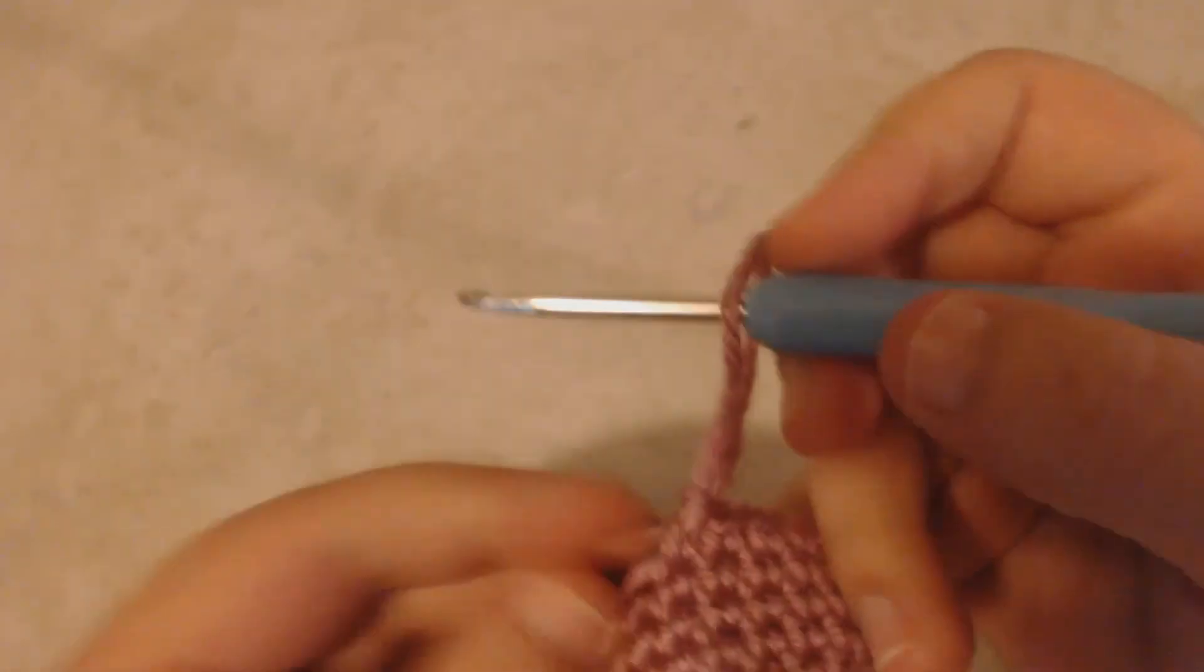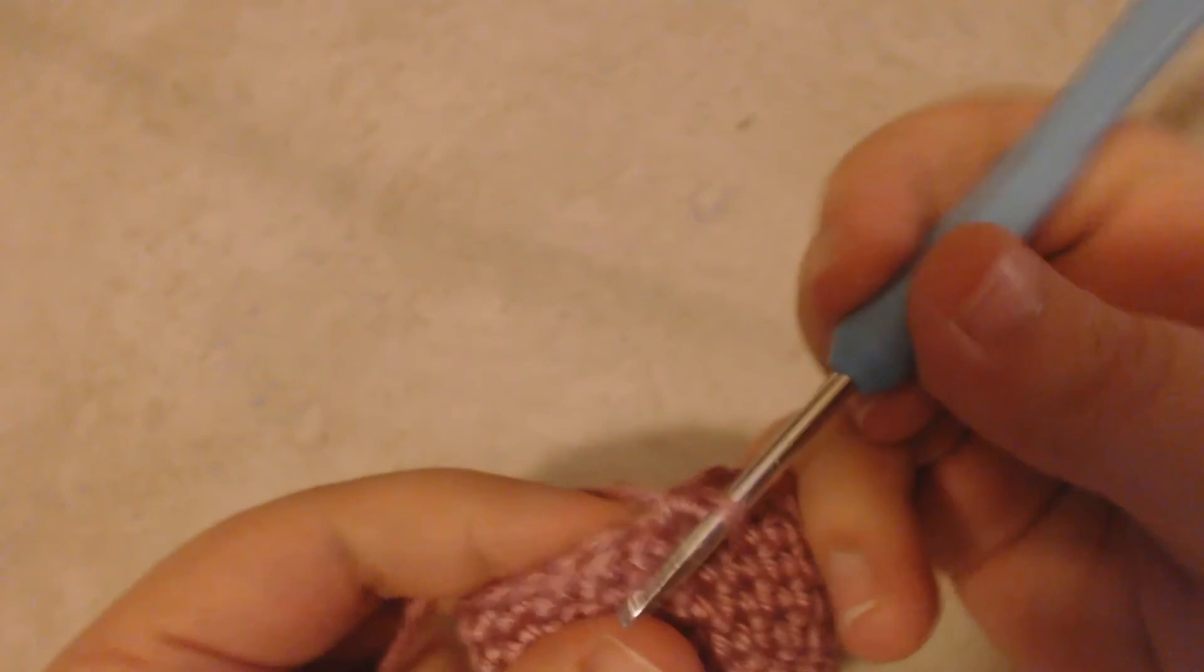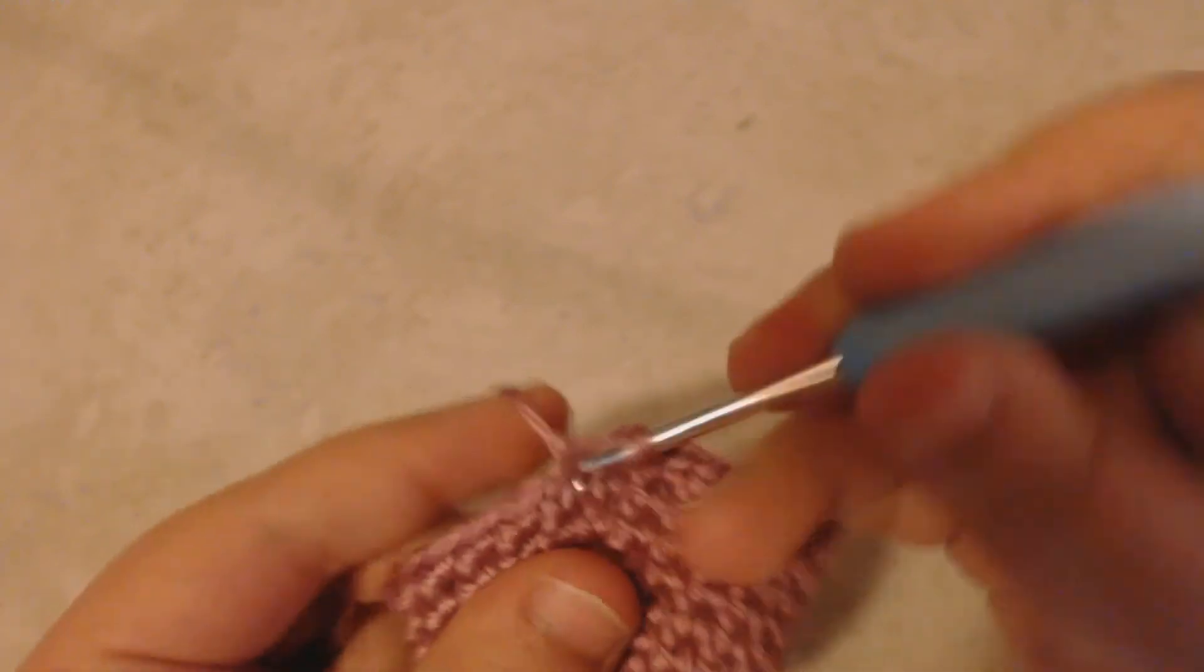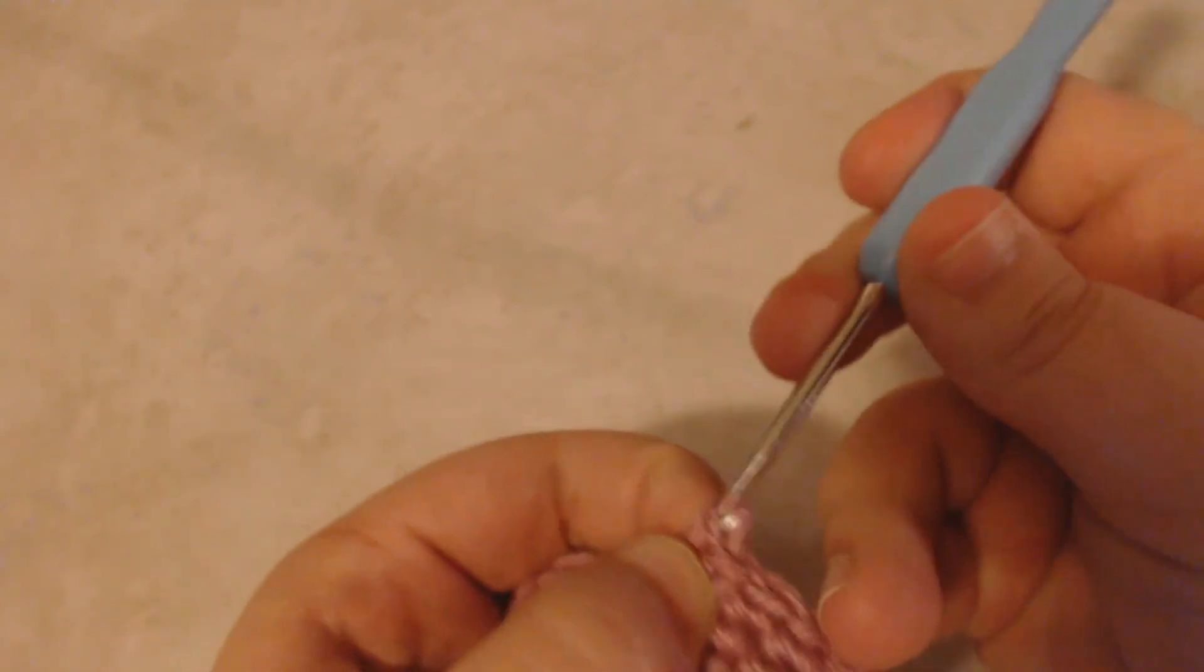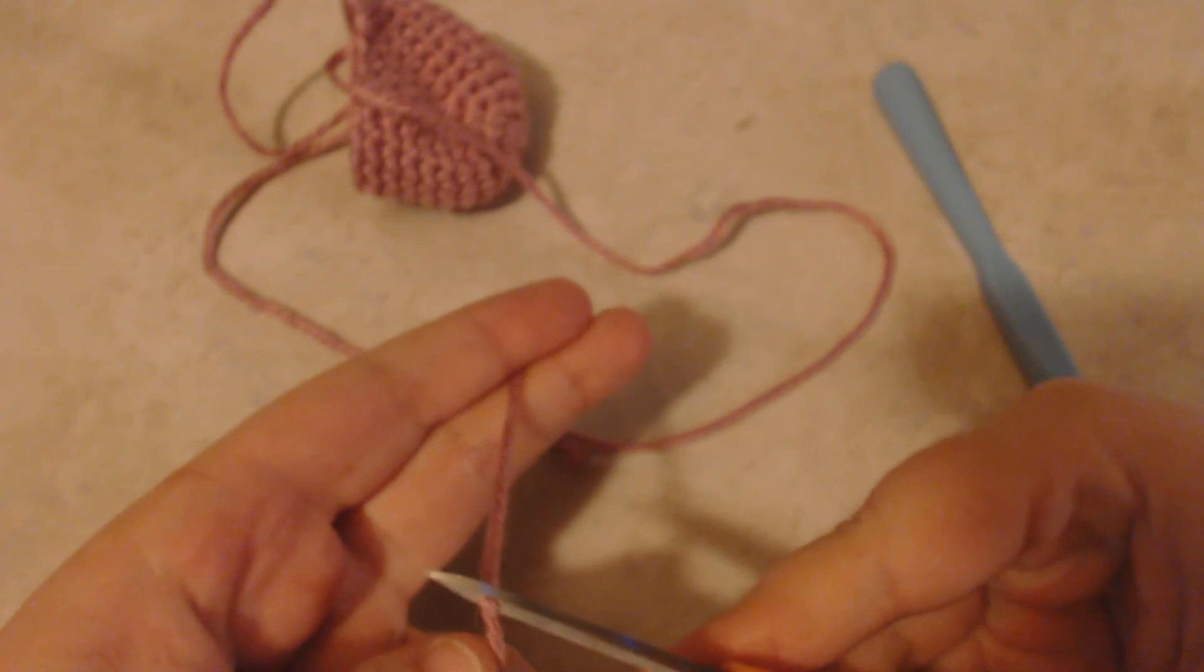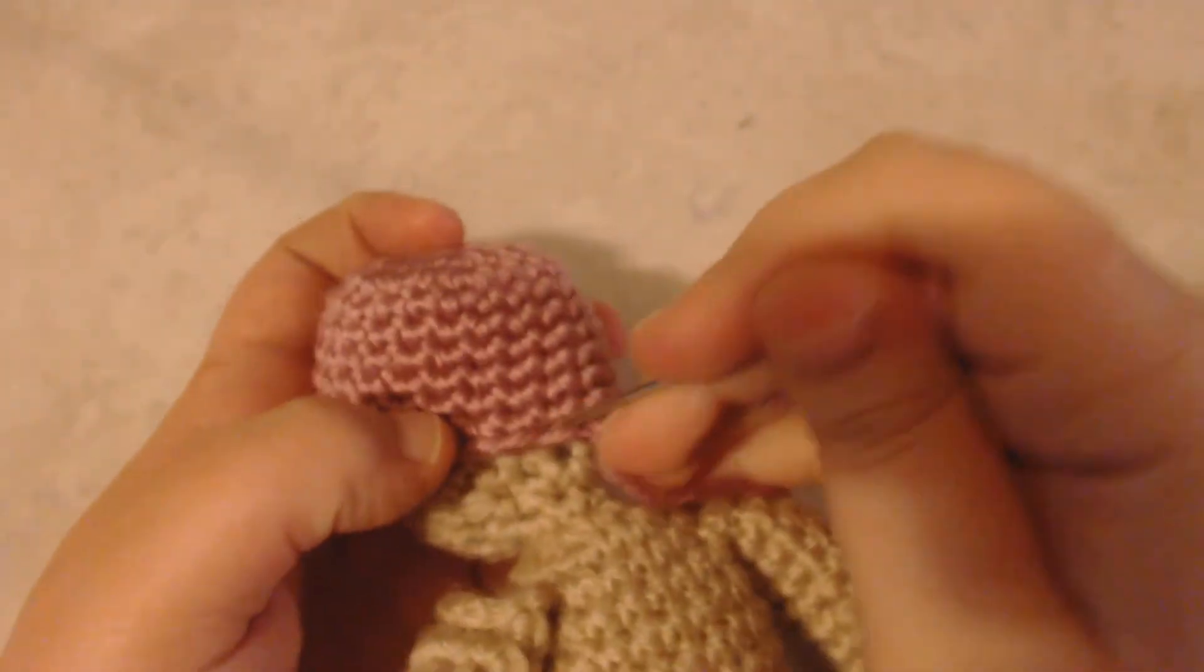So to do that I'm just going to slip stitch into the first stitch of my row. And then I'm going to cut off a long tail of my yarn and I'm going to use that tail to sew the wig cap to my doll's head.